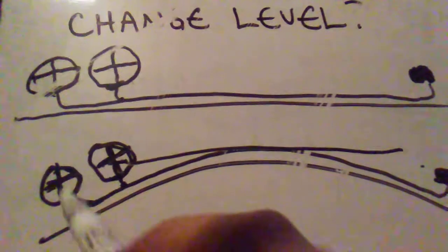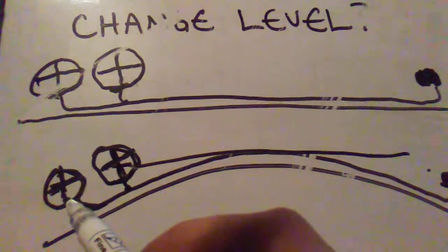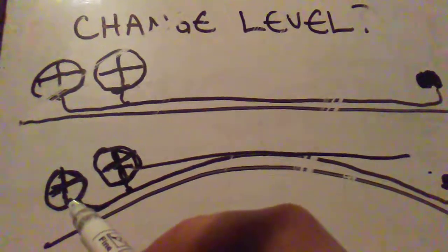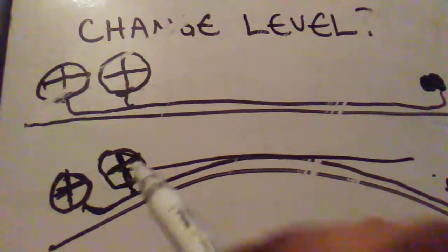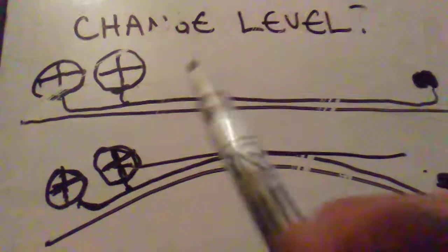If it is offset a little bit and this one is down a half an inch, then the Earth is curved.